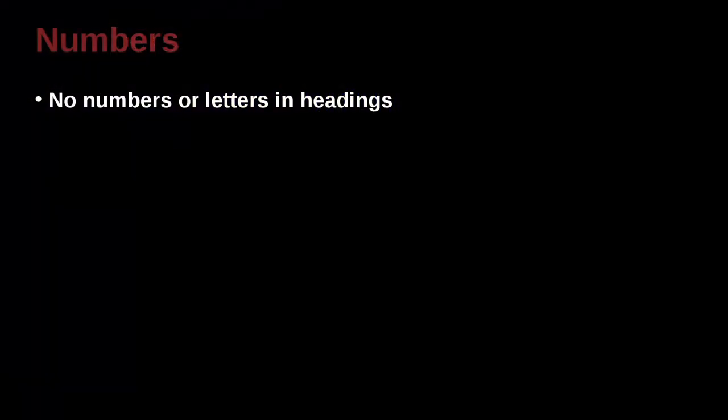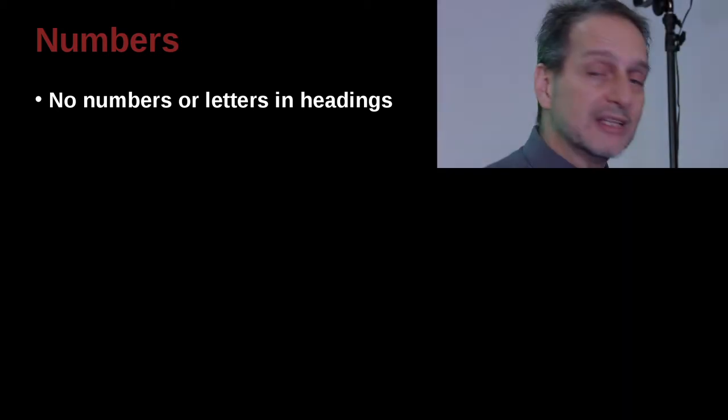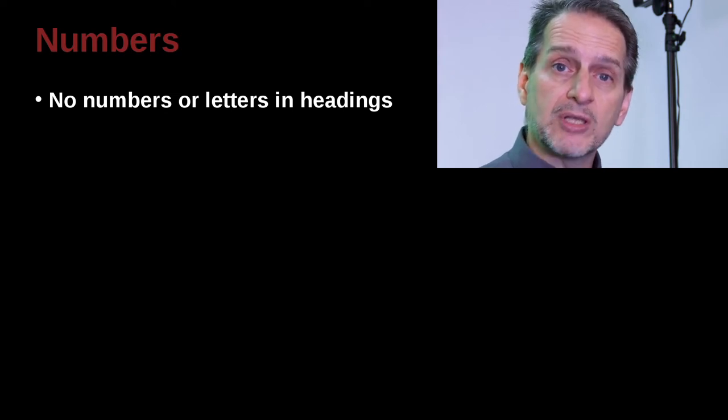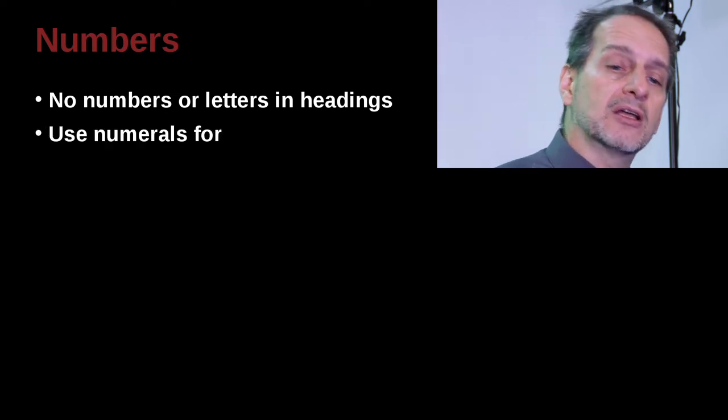Let's jump over to numbers now. You do not put numbers inside the headings of your paper. When you say methodology, results, discussions, sections and subsections do not have numbers. There may be a time where you do need to do that because your professor or journal has asked you to, but usually if you follow APA, no.